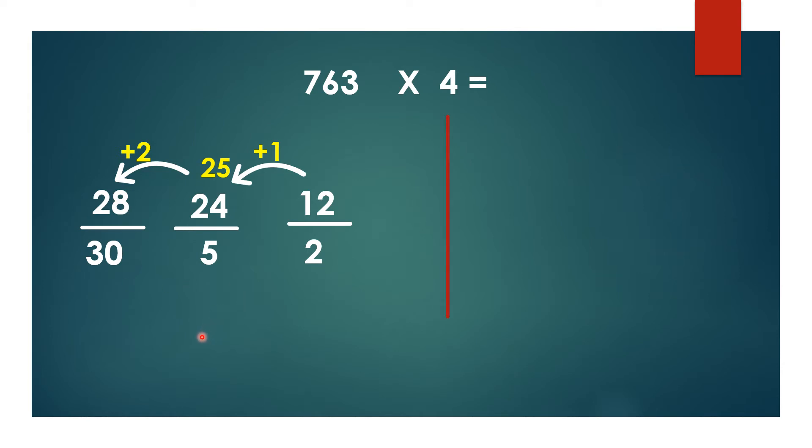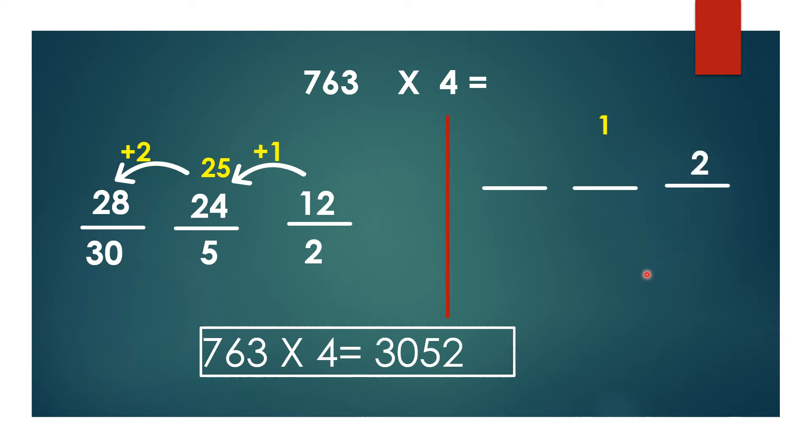The same thing I will show without using arrow marks, directly in one step. Divided into three parts. 4 × 3 = 12, so you write only the ones place, 1 you write above the next line. Now 4 × 6 = 24, so 24 plus 1 is 25.